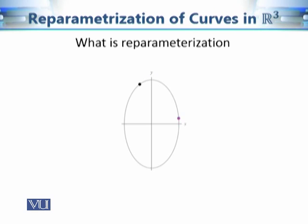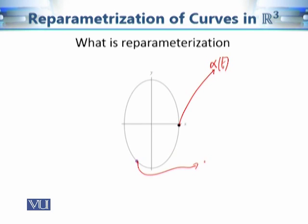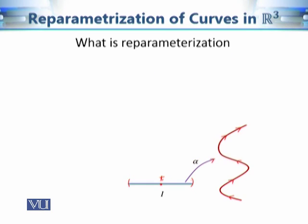The black dot represents one player moving at a faster pace, and the purple dot represents the second player moving at a slower pace. The black dot is alpha(t), tracing an elliptical path, and since the purple dot has a different speed it must come from a different function, say beta(t). Alpha(t) and beta(t) are different because the players have different speeds, yet they trace the same geometrical shape.